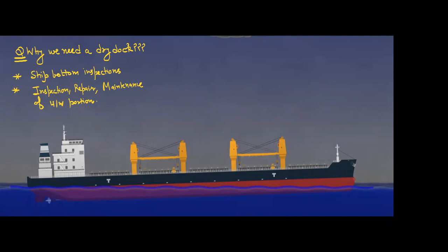The first question is: why do we need a dry dock? SOLAS regulations state that there has to be a ship bottom inspection. For a cargo ship, there shall be a minimum of two ship bottom inspections over a period of five years, at an interval not exceeding 36 months. One of these can be replaced by an in-water survey.